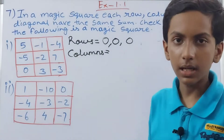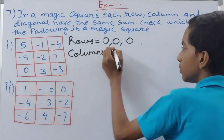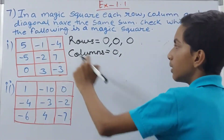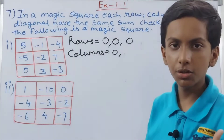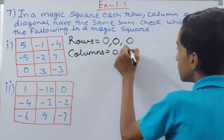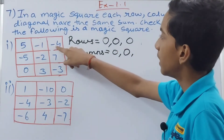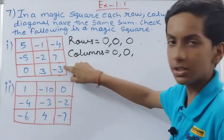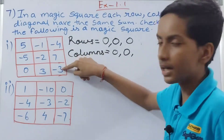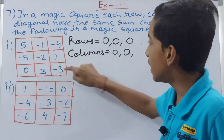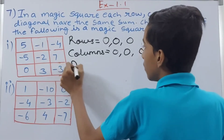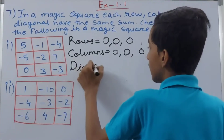Now the columns, which go vertically. First column: 5 minus 5 is zero. Second column: minus 1 minus 2 is minus 3, and minus 3 plus 3 is zero. Third column: minus 4 minus 3 is minus 7, and minus 7 plus 7 is zero. All three columns also sum to zero.